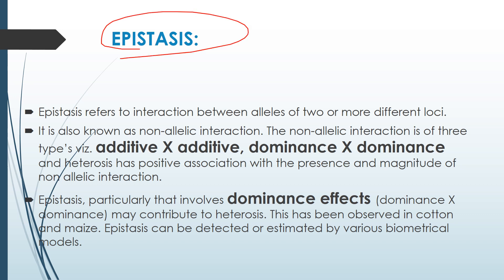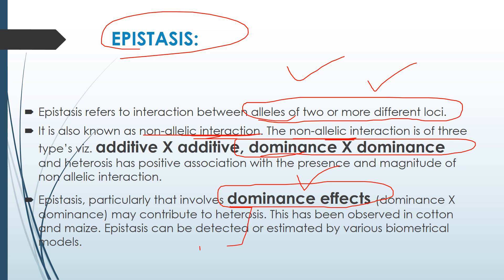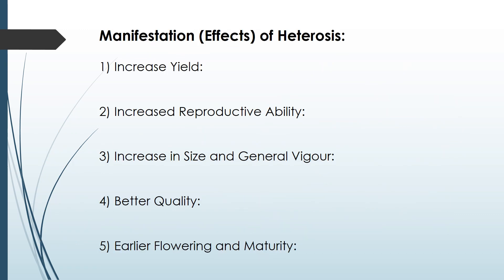The third theory is epistasis, which refers to the interaction between alleles of two or more different loci. It is also known as non-allelic interaction. The dominance effect is mainly produced due to non-allelic interaction of the type dominance × dominance, which gives greater beneficial effects or greater heterosis. There are various biometrical models for detecting epistasis in plants.